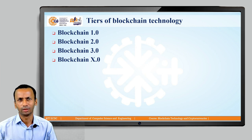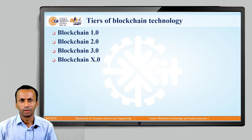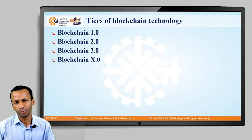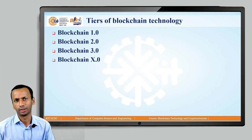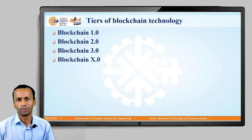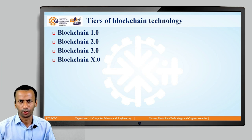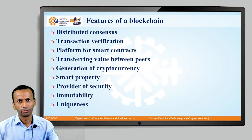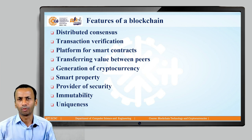Simply put, these are not technical layers in blockchain technology, but rather classifications based on application development and project implementation across different sectors of industry. Blockchains are categorized as tiers 1.0, 2.0, 3.0, and X.0. Now let us look at the features of the blockchain.